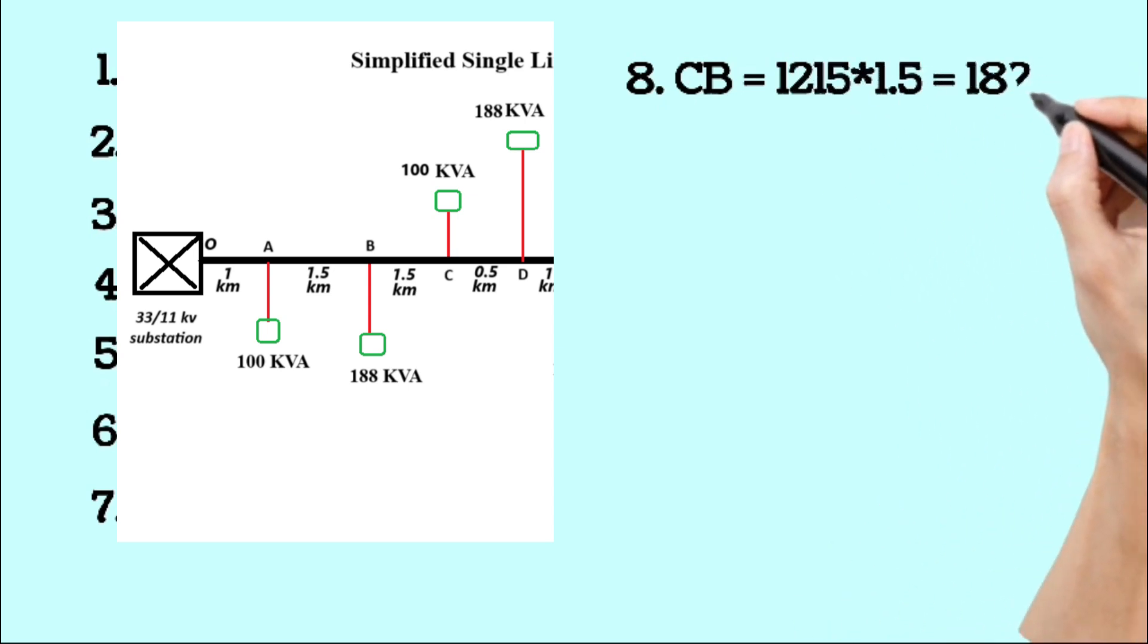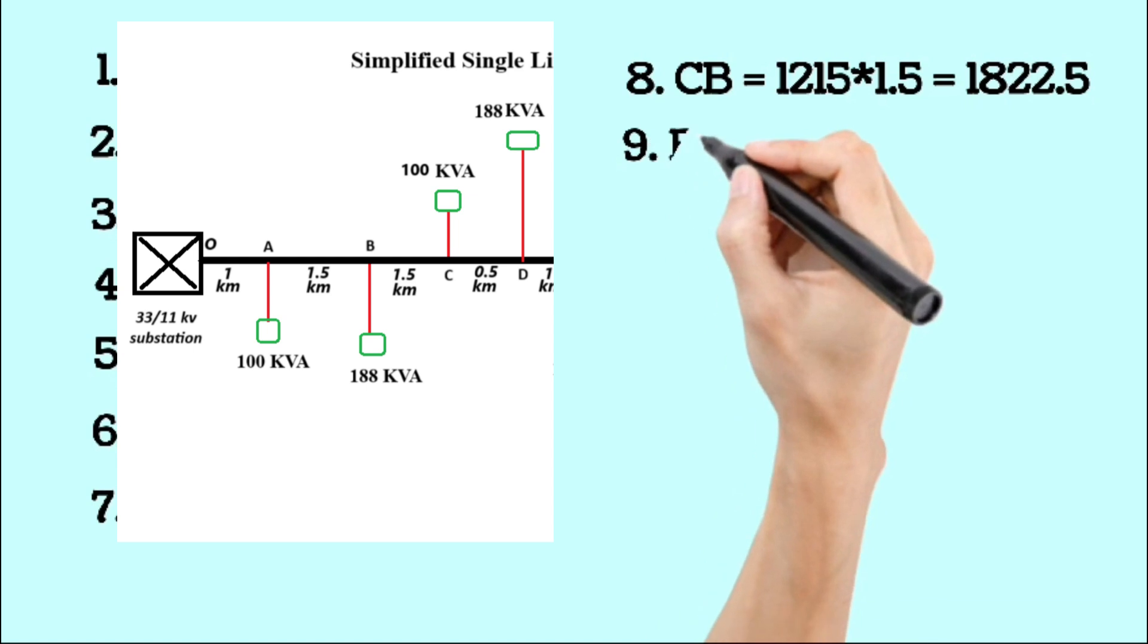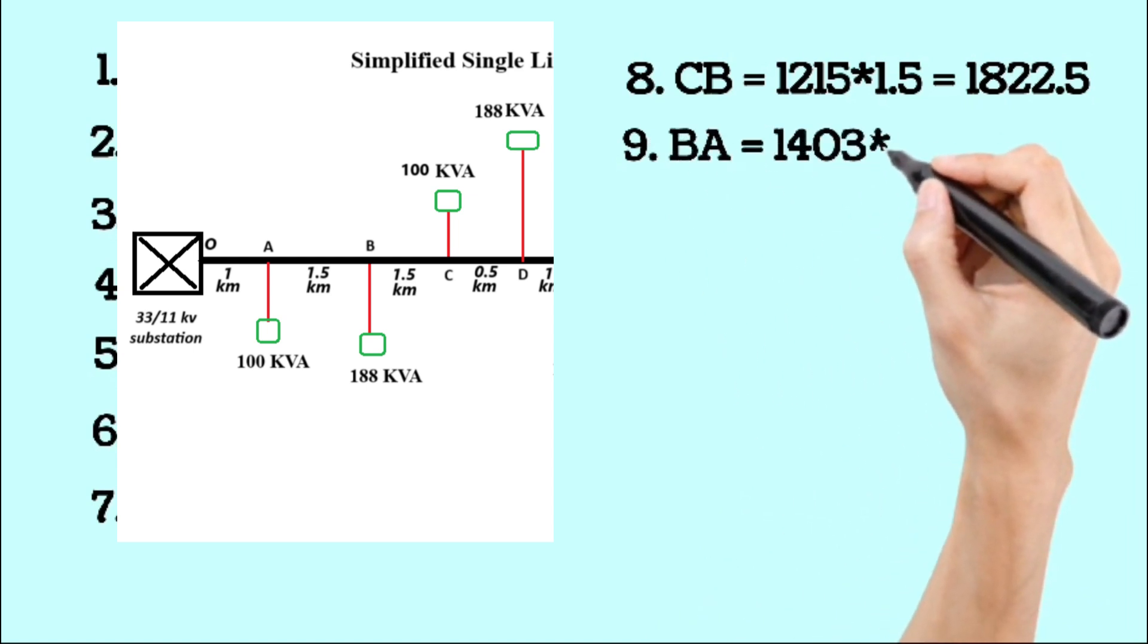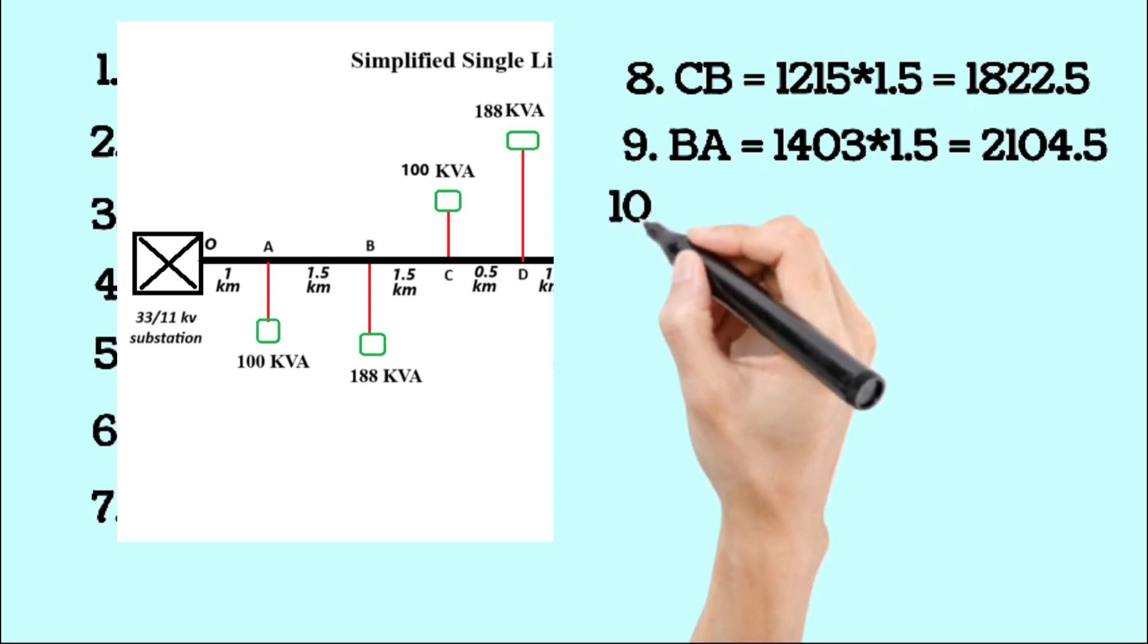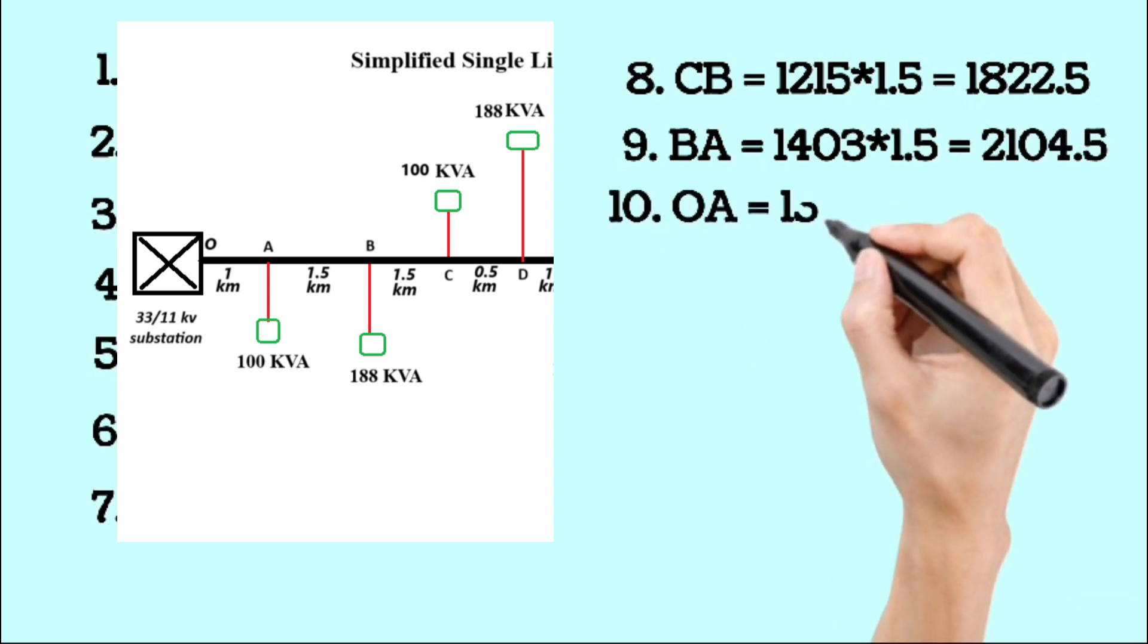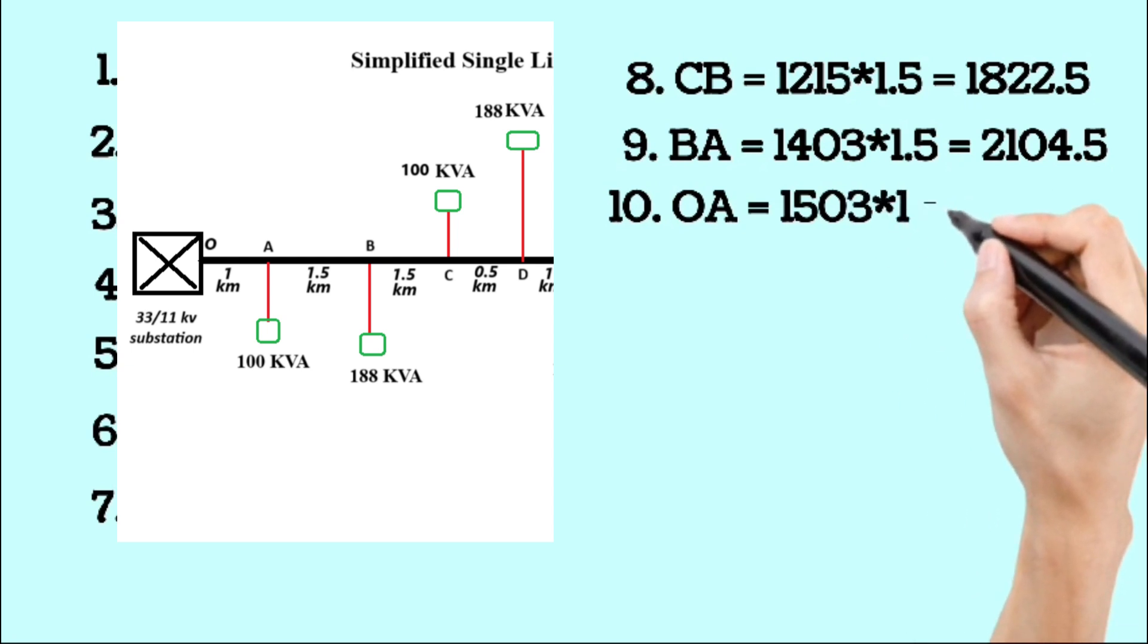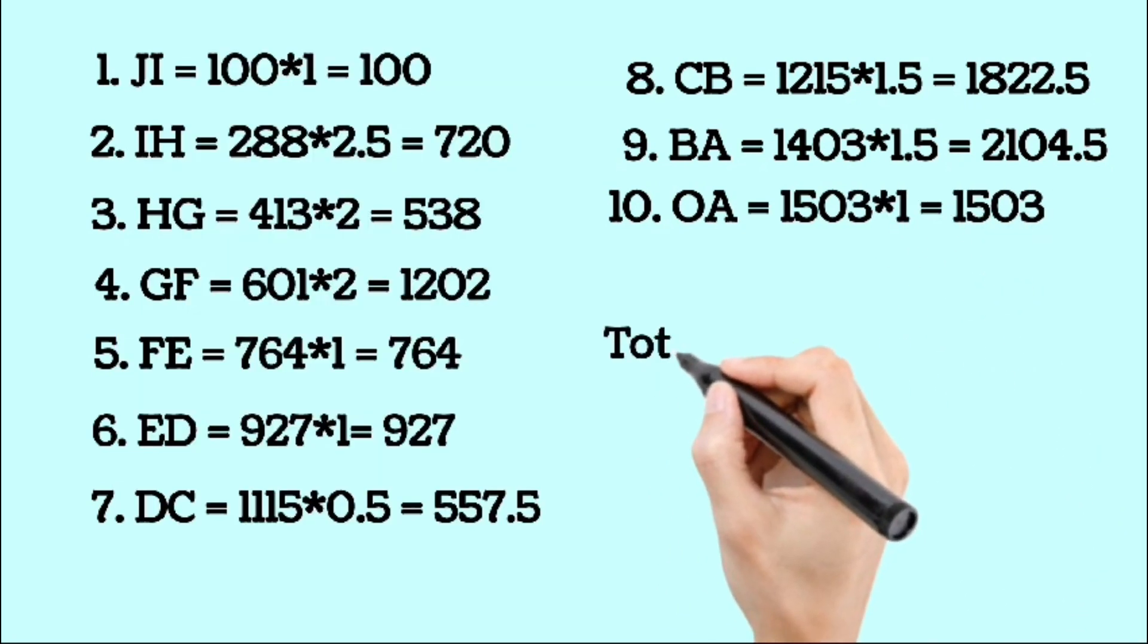For segment BA: 1403 multiplied by 1.5 equals 2104.5. Finally, for segment AO: 1503 multiplied by 1 equals 1503. Adding all these values together gives a total kVA kilometer of 10,526.4.